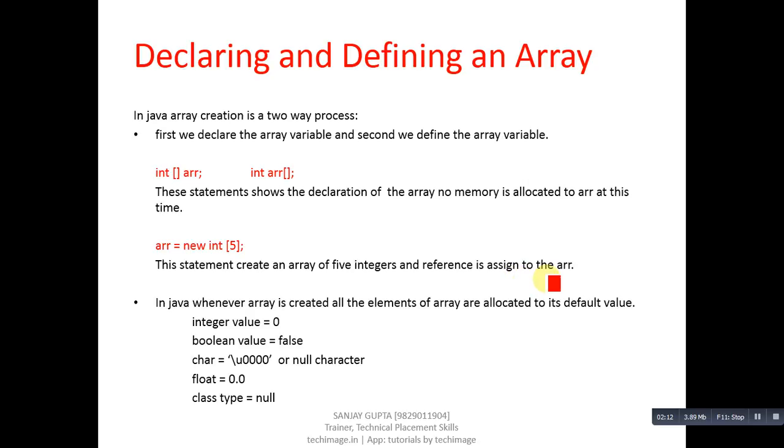This statement creates an array of five integers and reference is assigned to the arr. You can say that array works like an object in Java. In Java, whenever array is created, all the elements of array are allocated to its default value.